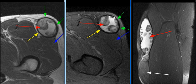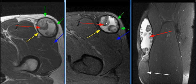The fluid collection has a thick hypointense capsule with internal hyperintensity and signal inhomogeneity, representing a subacute hemorrhage, entrapped fat globules, and internal septations.